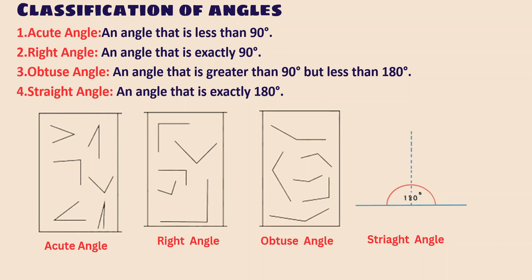Classification of angles. Angles can be classified into four types: acute angle, right angle, obtuse angle, and straight angle. An acute angle is less than 90 degrees — the first picture shows different acute angle values. A right angle is exactly 90 degrees, formed when two lines are perpendicular to each other. An obtuse angle is greater than 90 degrees. A straight angle is by default 180 degrees — it is a straight line.